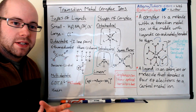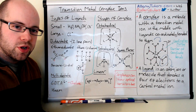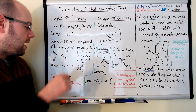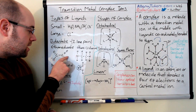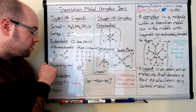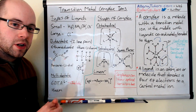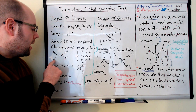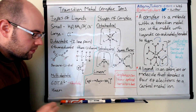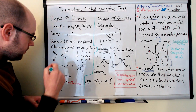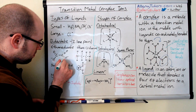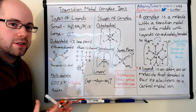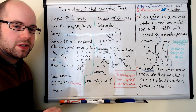Sometimes we can have bidentate ligands, which can donate two lone pairs of electrons to a metal ion in the middle. For example, ethane dioate — make sure it's got the E in there — is basically a dicarboxylic acid with the hydrogens missing, giving a negative charge on both oxygens, so the overall ligand is 2 minus. With lone pairs on both oxygens, it can bond twice to the metal. This makes it a large ligand, so you can't fit many of them around a central metal ion.